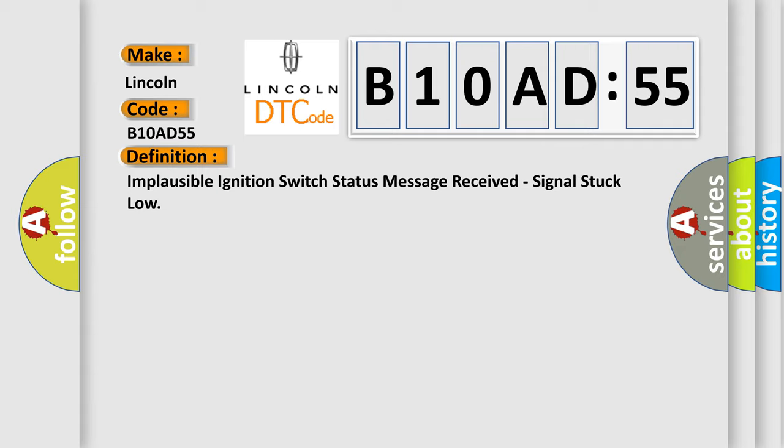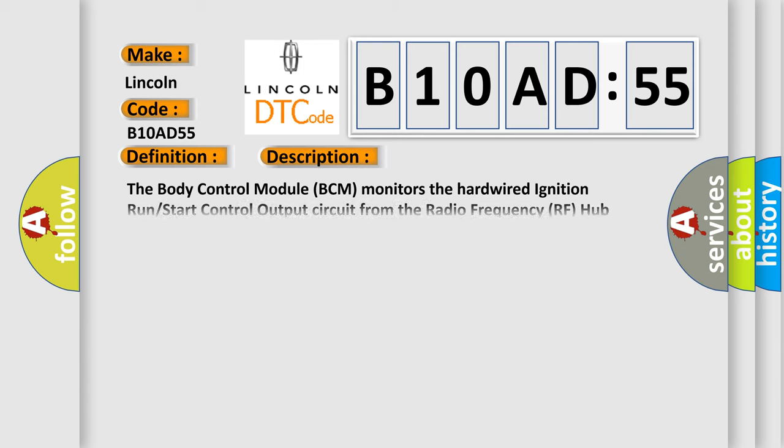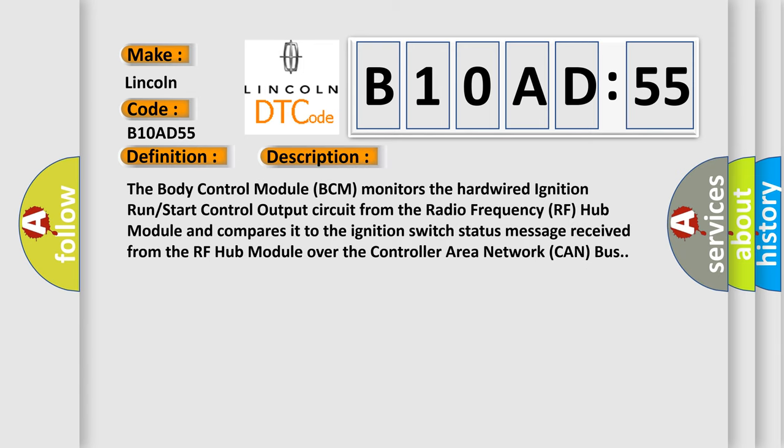And now this is a short description of this DTC code. The body control module BCM monitors the hardwired ignition run start control output circuit from the radio frequency RF hub module and compares it to the ignition switch status message received from the RF hub module over the controller area network CAN bus.